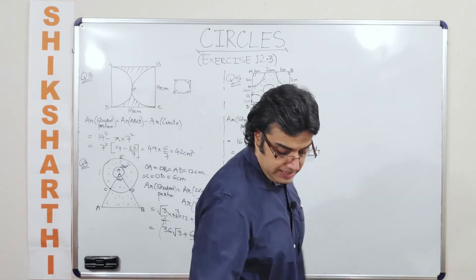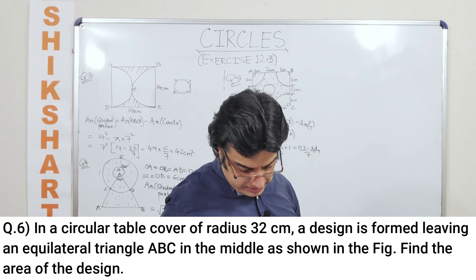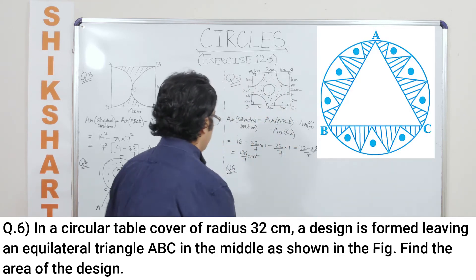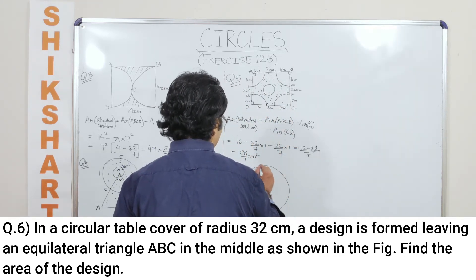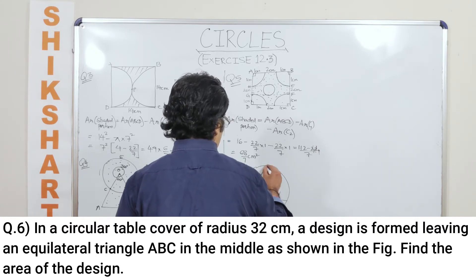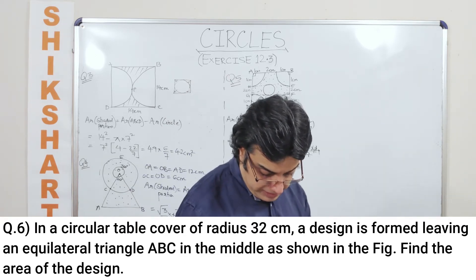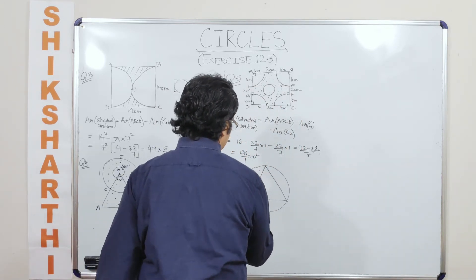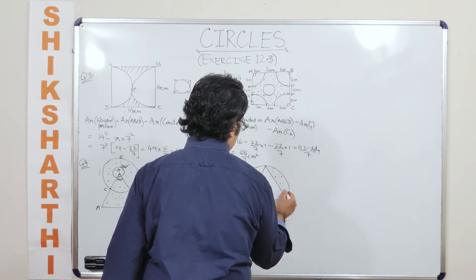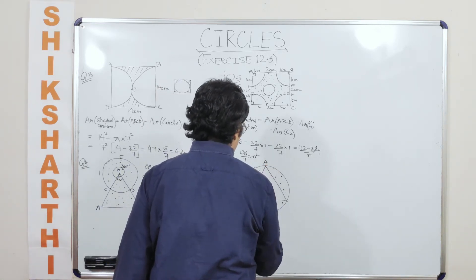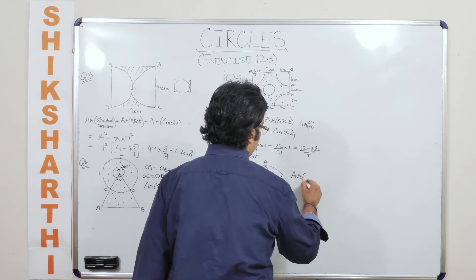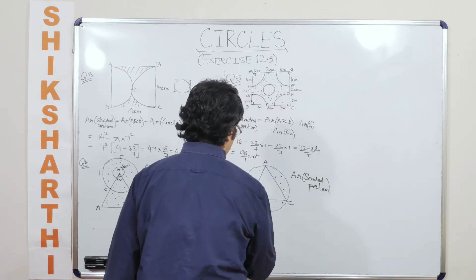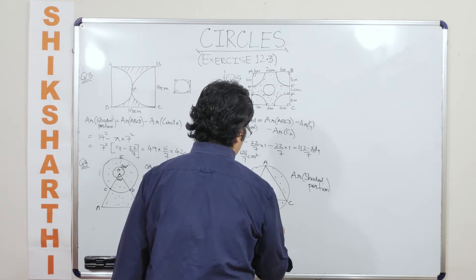Question number six says: in a circular table cover of radius 32 centimetres, a design is formed leaving an equilateral triangle ABC in the middle. We have done a similar question earlier with a hexagon. Find the area of the design — basically these three segments. The area of the shaded portion is equal to the area of the circle minus the area of triangle ABC.